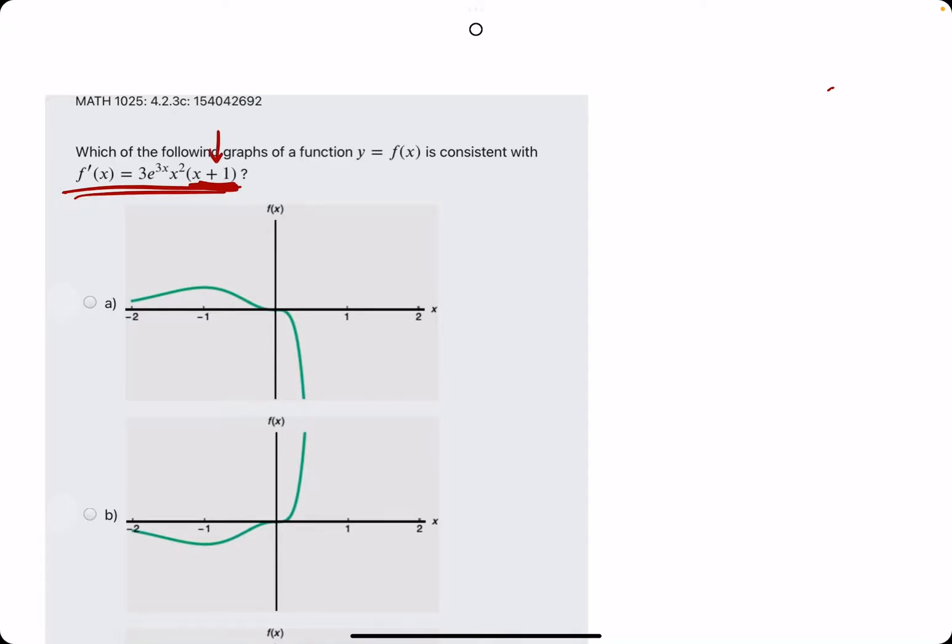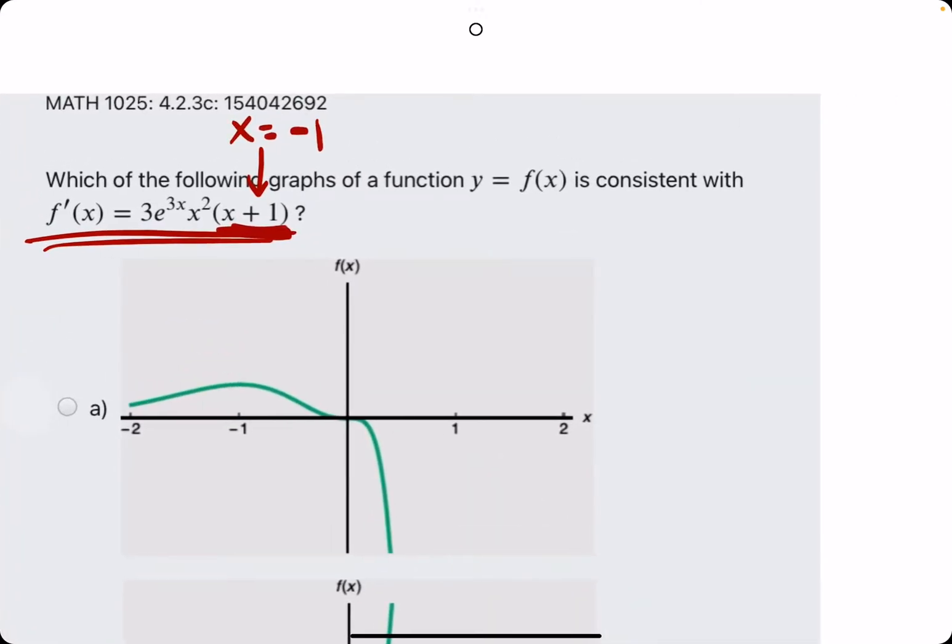And when we think about x plus 1, the x value that makes x plus 1 equal to 0 is negative 1. If we plugged in negative 1 in place of this x, we'd have negative 1 plus 1, that would be 0. And because everything here is being multiplied together, then that means f prime should equal 0 when x equals negative 1. The other x value that makes f prime 0 is 0, because when plugged into x squared we get 0, and that multiplied by everything else also makes f prime equal to 0.